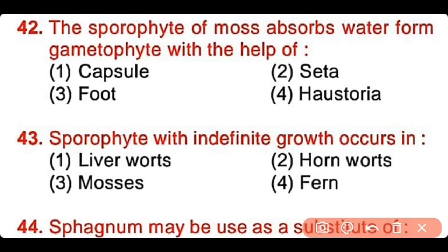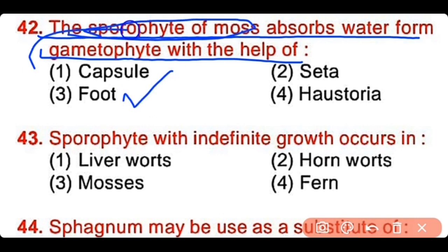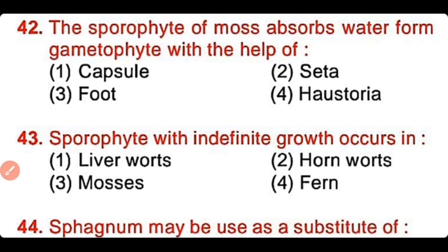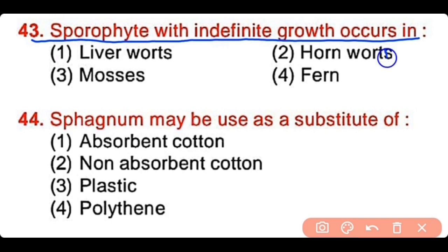Question number 42: The sporophyte of mosses absorbs water from the gametophyte with the help of capsule, seta, foot, or hysteria. The correct answer is option 3. The sporophyte of mosses absorbs water from the gametophyte by means of the foot. Question number 43: The sporophyte with indefinite growth occurs in liverworts, hornworts, mosses, or ferns. The correct answer is option 2. Hornworts have a sporophyte that has indefinite growth.